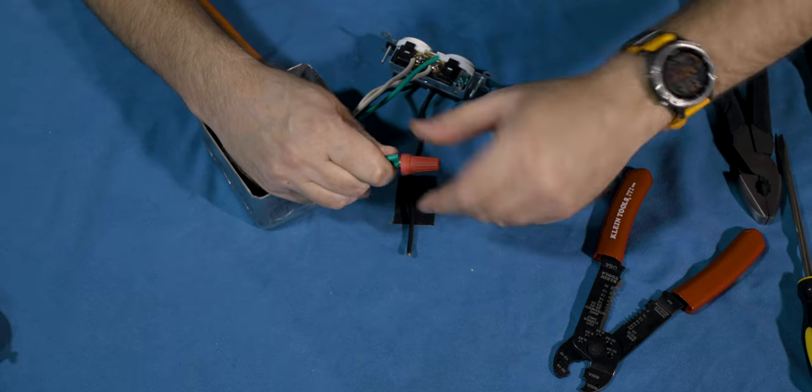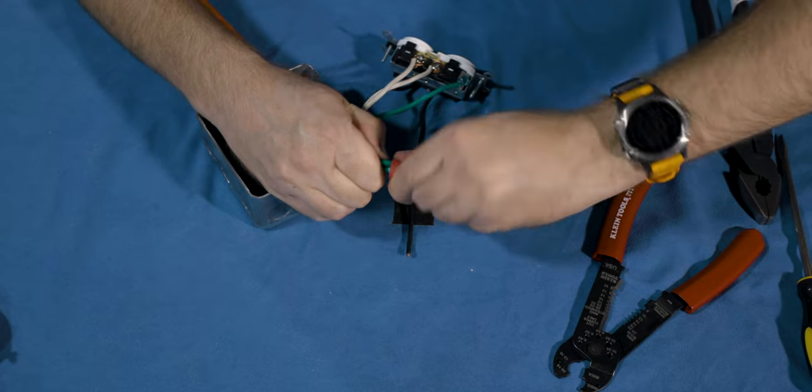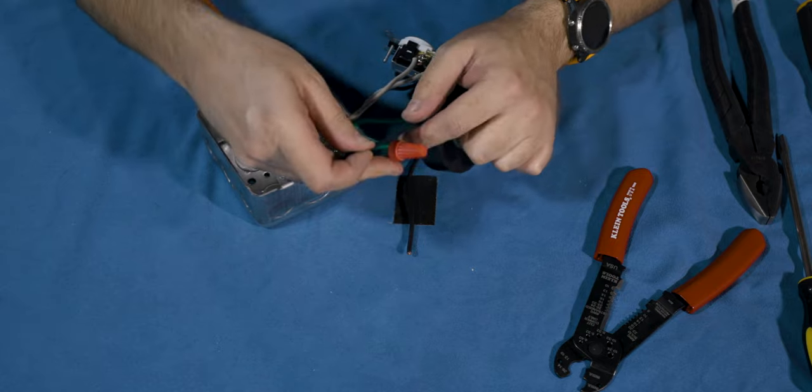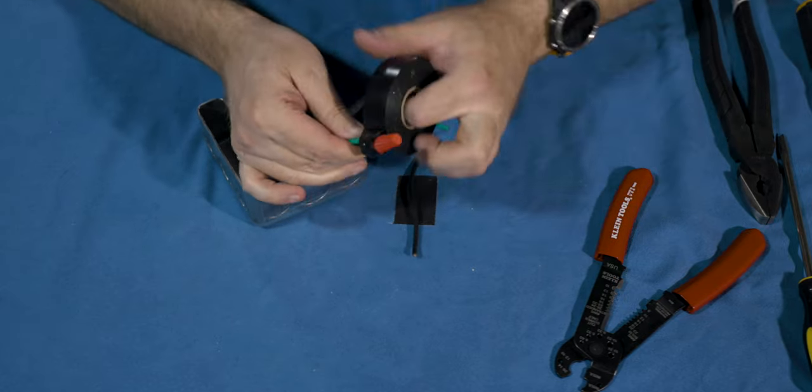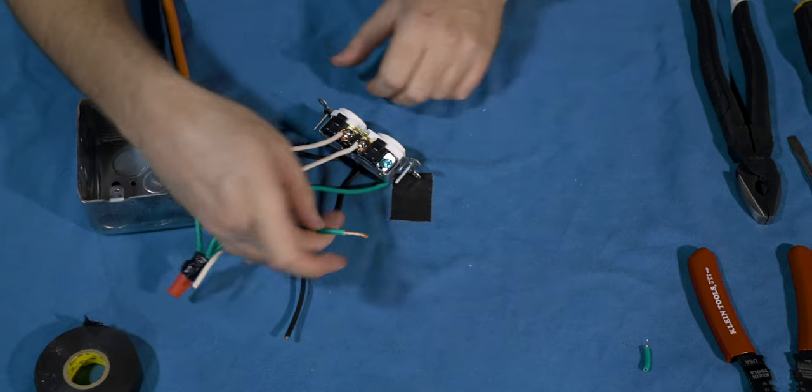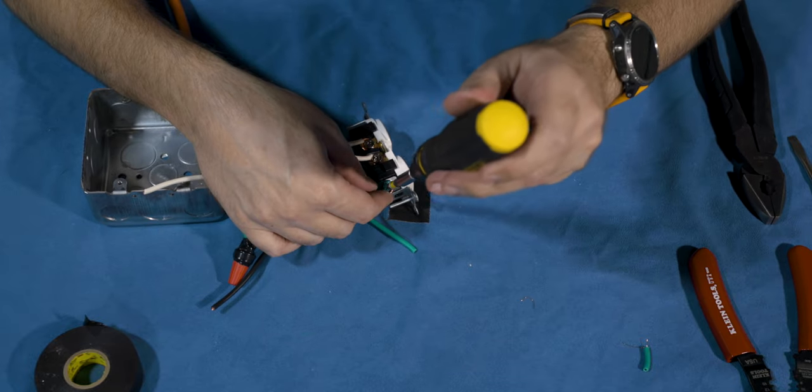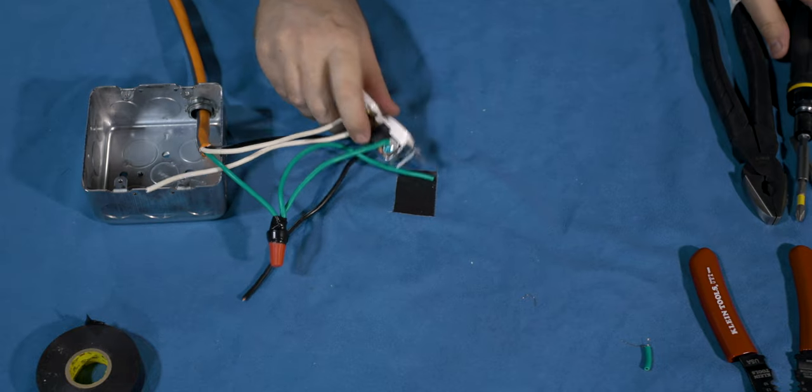So screw that down good and tight. And what we're going to do is take some of the electrical tape, and we're actually even going to do a little extra wrapping here. And then the green wire goes around the green screw. Screwdriver. Tighten. Good and tight. Just like that.